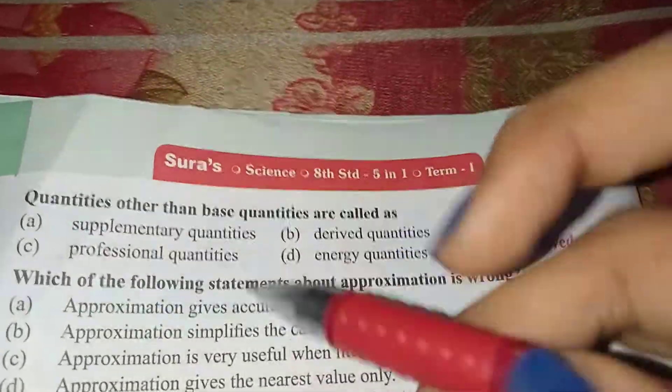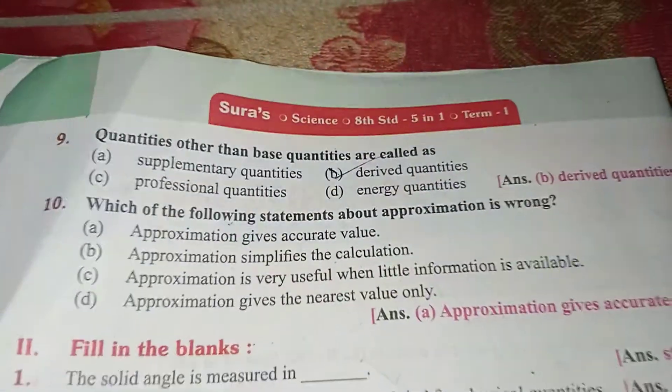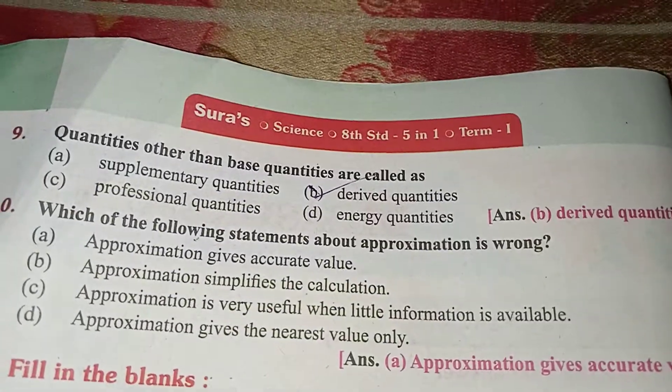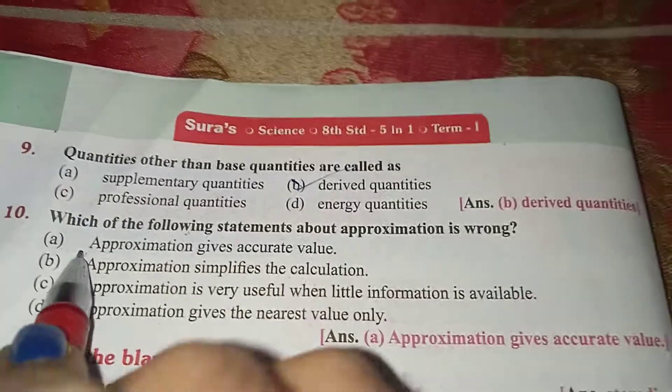Quantities other than base quantities are called derived quantities. Next. Which one of the following statements about approximation is wrong? Approximation gives accurate value.